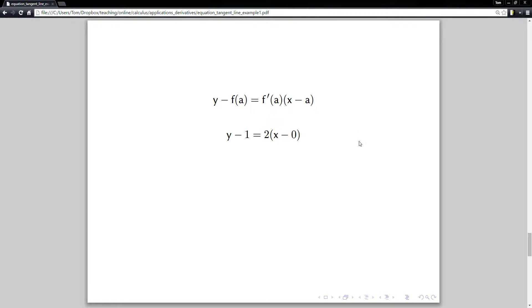And so now we have our equation, and we just need to simplify that and put it into the slope-intercept form. So that is the equation, y = 2x + 1.